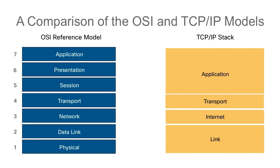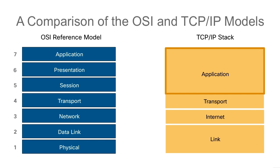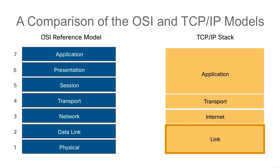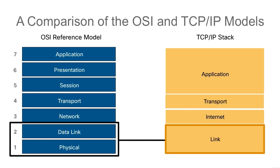Comparing the OSI reference model to the TCP/IP stack, the big difference is that the TCP/IP stack combines the top three layers of the OSI model. All of that functionality — service to the application, data formatting at the presentation layer, and session services — are handled by an application protocol in the TCP/IP stack, such as SMTP. At the bottom, the physical and data link layers are also combined — that's another key difference between the two models.